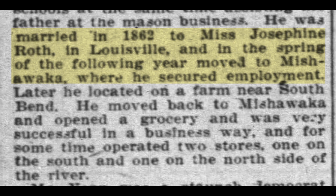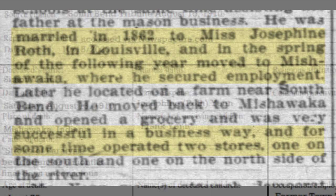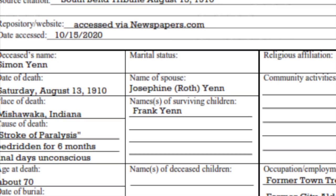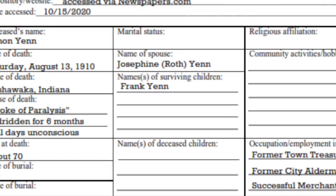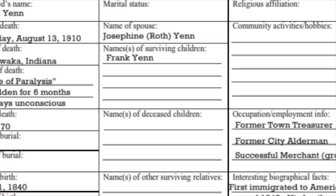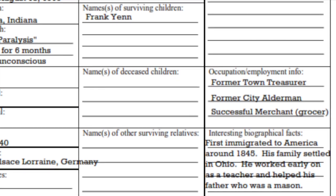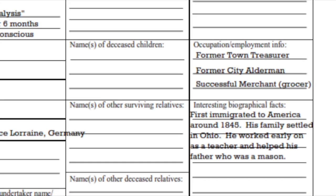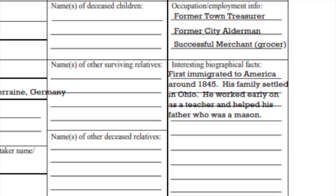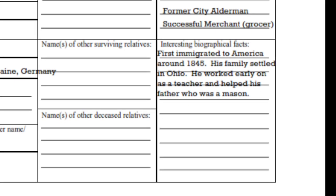It looks like he married Josephine Roth in 1862 in Louisville. Is that Louisville, Kentucky, or Louisville, Ohio? We'll have to look into that. Soon after they got married, the couple moved to Mishawaka, Indiana, where Simon owned two grocery stores and became a fairly successful businessman. From these few paragraphs, we have learned Josephine's maiden name and the years he spent in Ohio, 1845 to 1862. We can now start looking at Ohio records, not only for evidence of Simon, but of the Roth family as well.